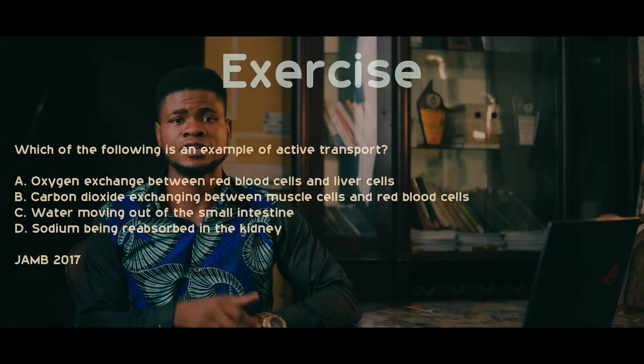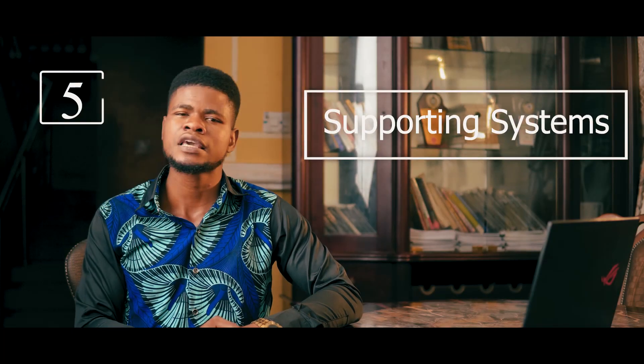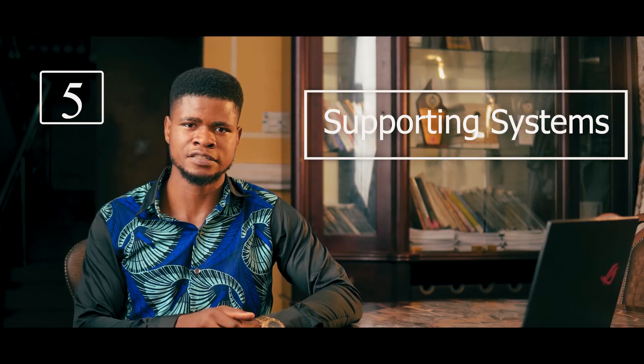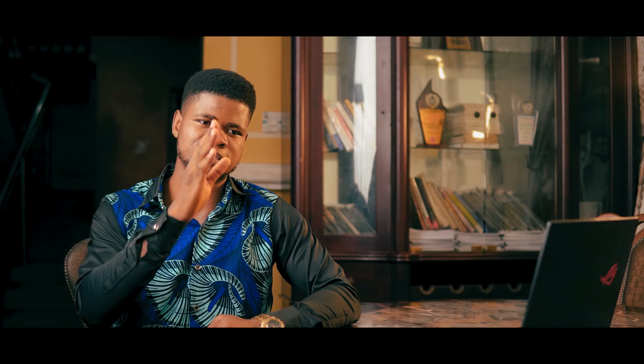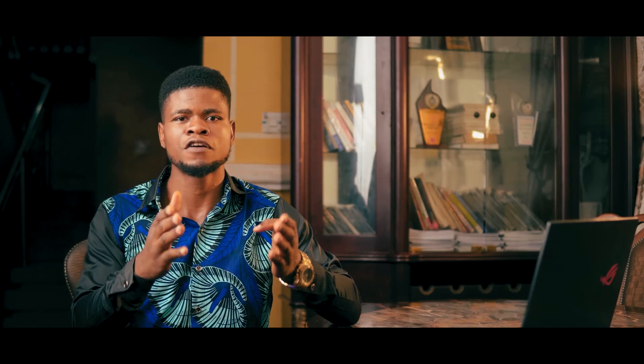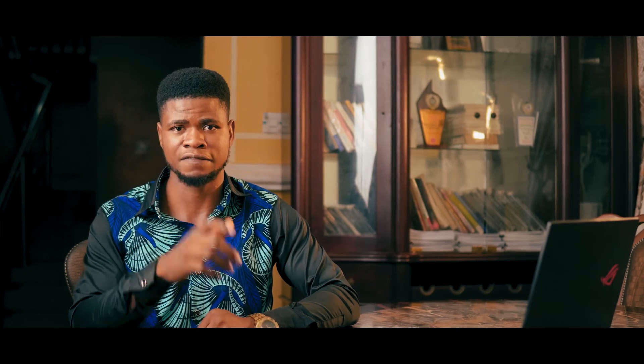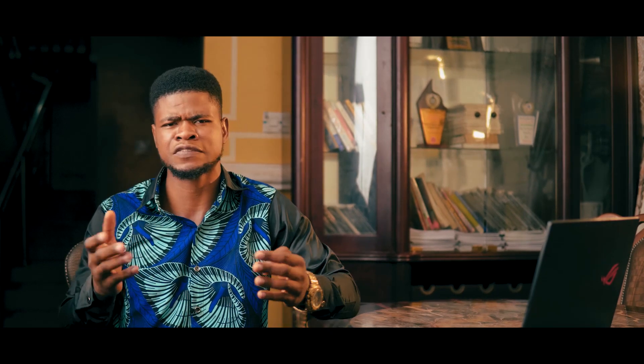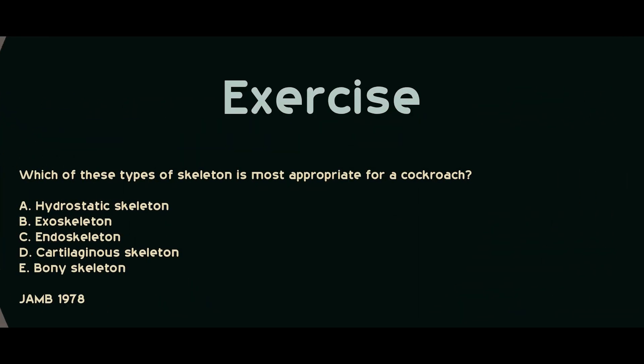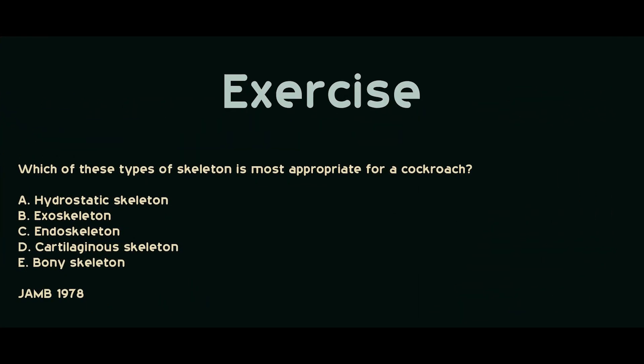The next is supporting systems. Here you should know the types of cartilages and how cartilages ossify — that is, calcify — from cartilages to bones. You should know the types of skeletal systems and the organisms that have them. Please pay attention to this; you might be asked which kind of skeleton an insect has. Attempt the question on your screen and leave your answers in the comment section.